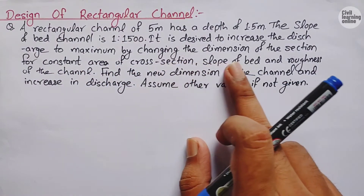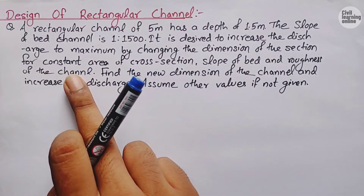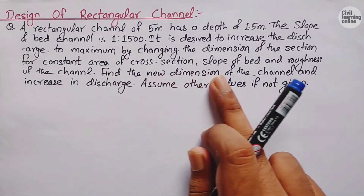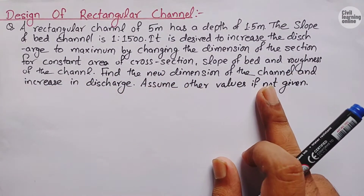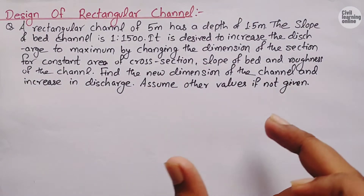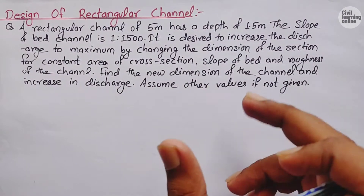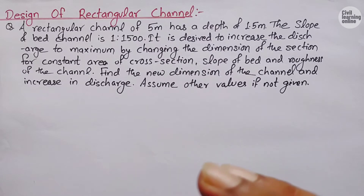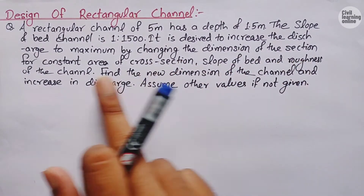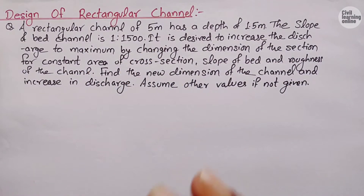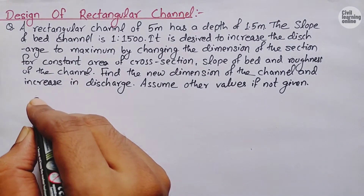The conditions are: constant area of cross-section, slope of bed, and roughness of the channel. We need to find the new dimensions of the channel and the increase in discharge. We are told to assume other values if not given, meaning some values are missing which we must assume, while keeping the cross-sectional area, bed slope, and channel roughness constant.